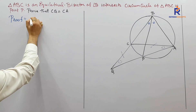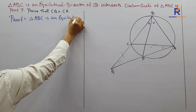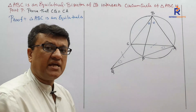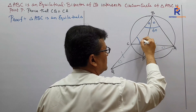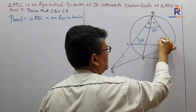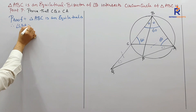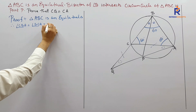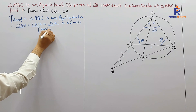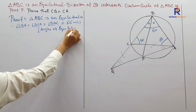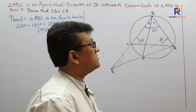Triangle ABC is equilateral, so each angle is 60°. Therefore angle CBA equals angle BCA equals angle BAC equals 60°. This is equation number one — angles of an equilateral triangle.